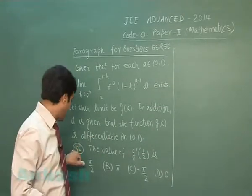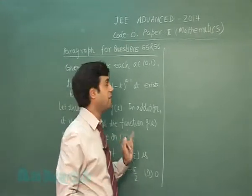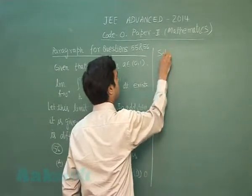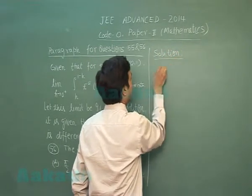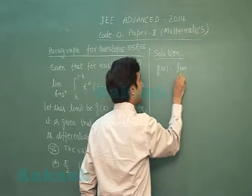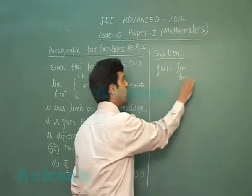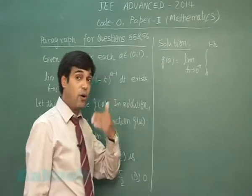Let's go for the next question of this paragraph, that is question number 56. The value of g'(1/2) is? So g(a) is given to me as limit h approaching 0+, integral h to 1-h...